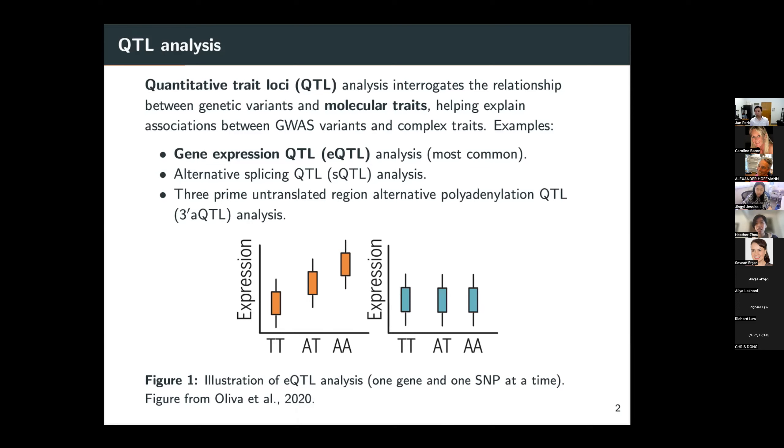Examples of QTL analysis include gene expression QTL or EQTL analysis, which is the most common, also alternative splicing QTL, SQTL analysis, and a newer example is the 3' untranslated region alternative polyadenylation QTL analysis.